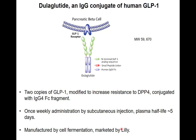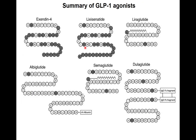Albiglutide needs to be produced by cell culture fermentation using Saccharomyces cerevisiae baker's yeast, making it an expensive drug to produce — so expensive that GlaxoSmithKline may stop producing it. The Lilly version, dulaglutide, has two copies of GLP-1 covalently linked to an IgG4 immunoglobulin Fc fragment. This is also suitable for once weekly administration, produced by cell fermentation, with a plasma half-life of around five days and a molecular weight of about 60,000.